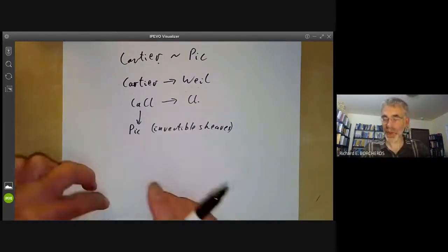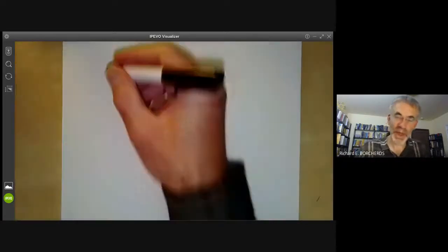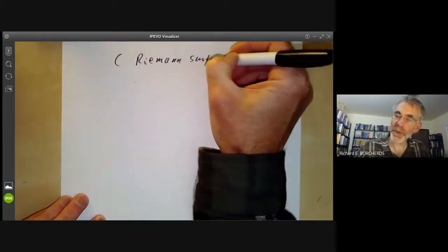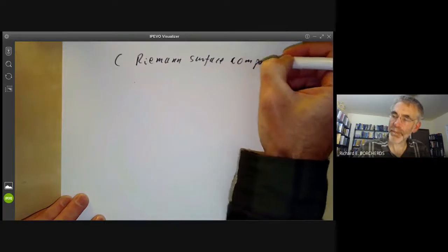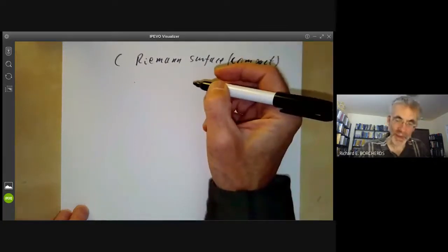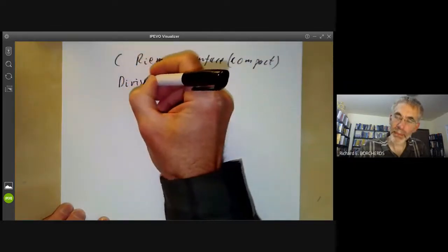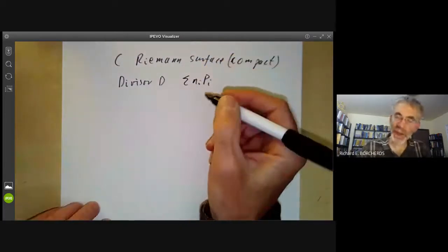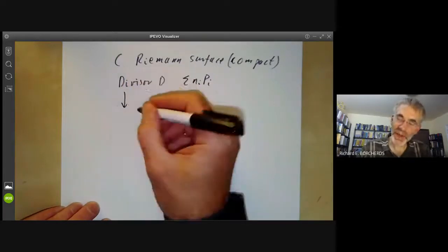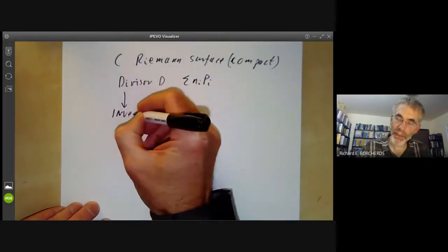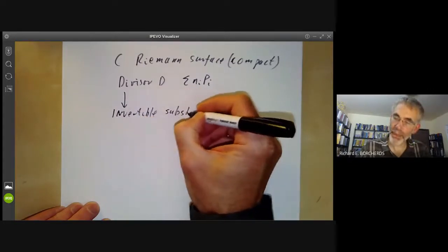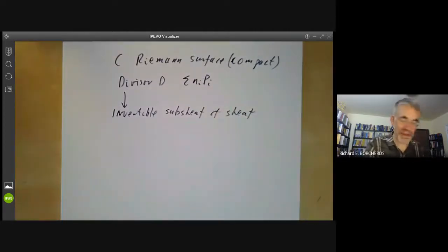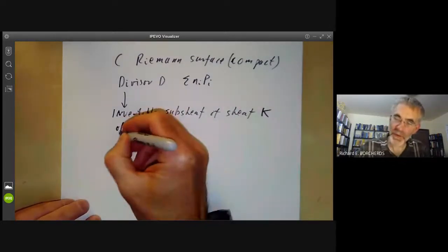Let's see how this construction works for Riemann surfaces. Suppose C is a Riemann surface, which we may as well take to be compact, and it has a divisor D consisting of a sum of points with multiplicities. We're going to make this into an invertible subsheaf of the sheaf K of meromorphic functions.